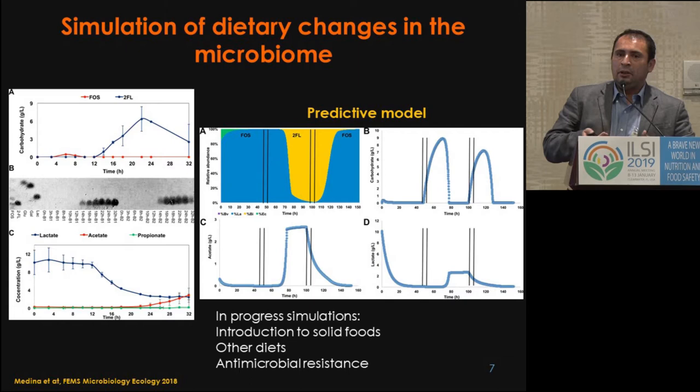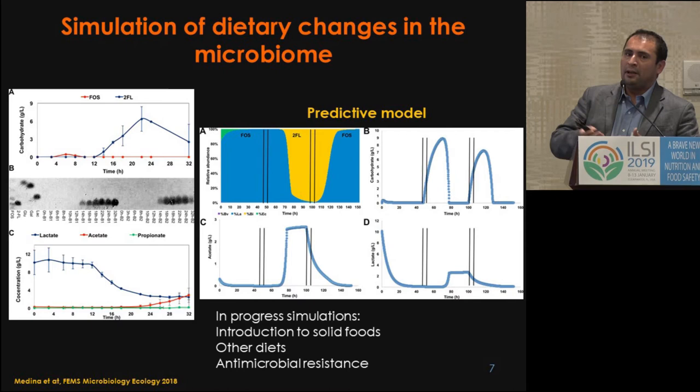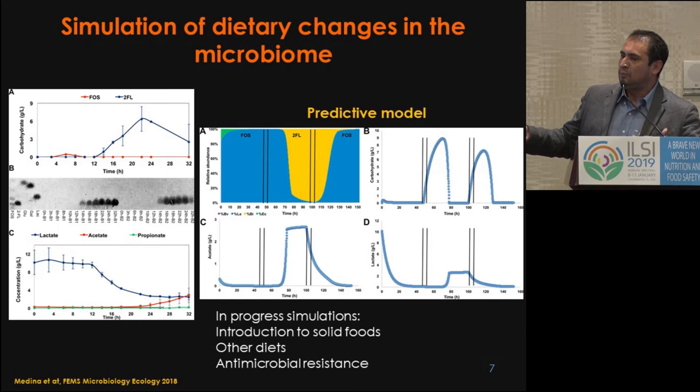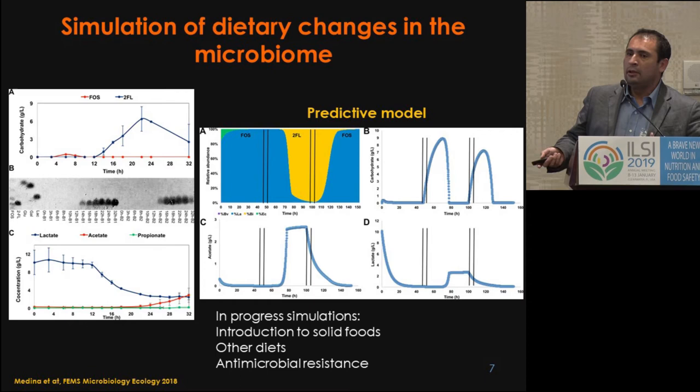We also applied our predictive modeling to simulate what would happen going from one diet to the other. On each phase there is one microbe dominating the system. The model predicted that carbohydrate after any switch will increase up to a point and then get consumed after the adaptation period, and that acetate and lactate will build up and then be washed out after the switch.